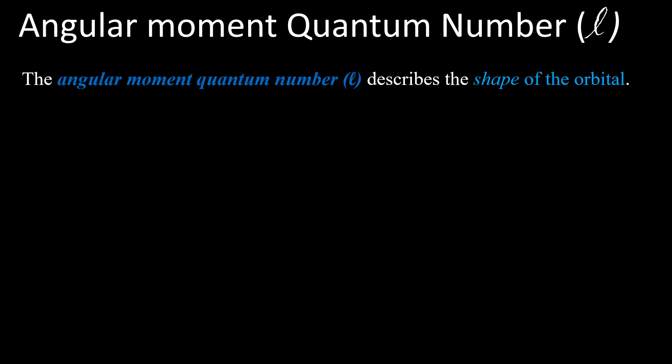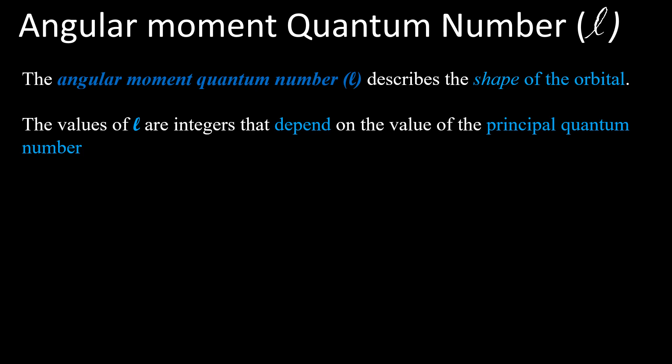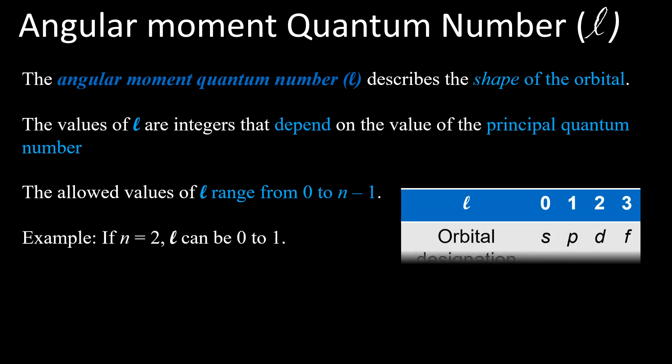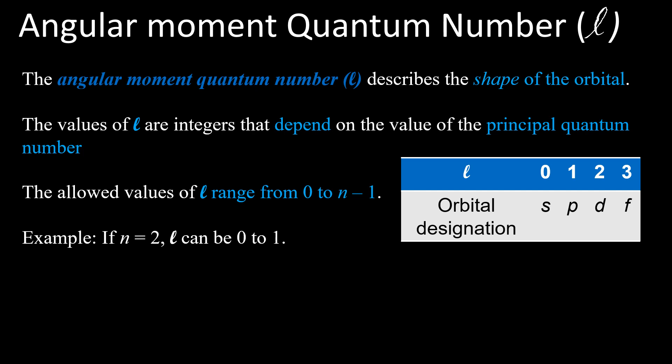The angular momentum quantum number L describes the shape of the orbital — it refers to the subshell. The value of L are integers that depend on the value of the principal quantum number. The range of L is from 0 to n minus 1. These different values correspond to different shapes: L = 0, 1, 2, 3 and so on.